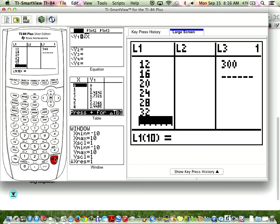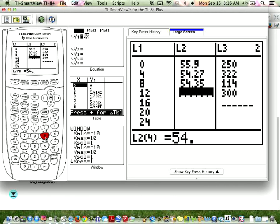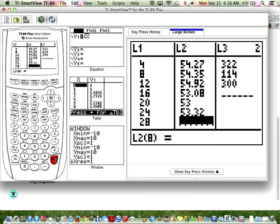Then in list two, we're going to enter the times: 55.9, 54.27, 54.35, 54.92, 53.08, and the remaining times. Make sure when you get done you have 10 and 10 in your list.